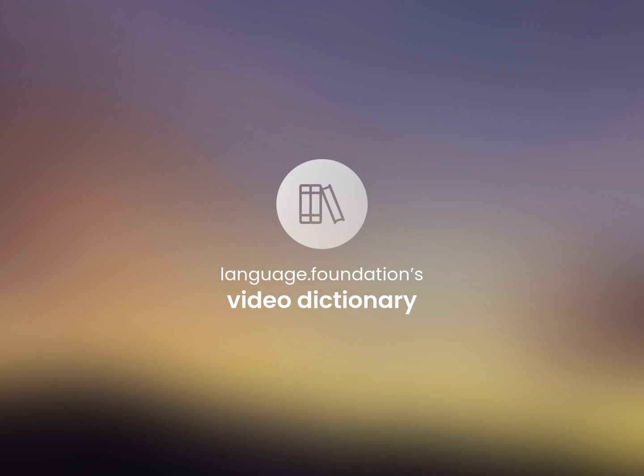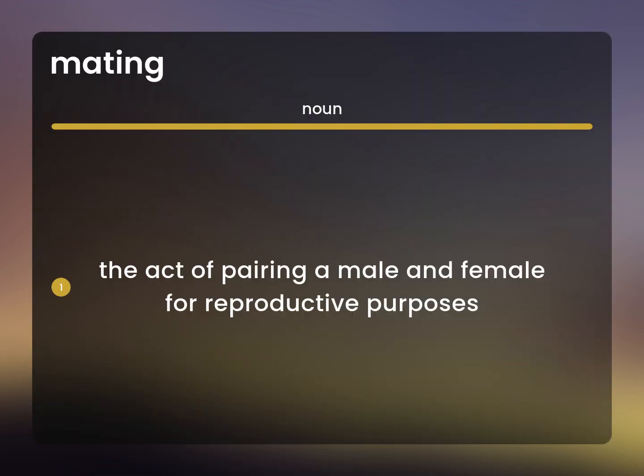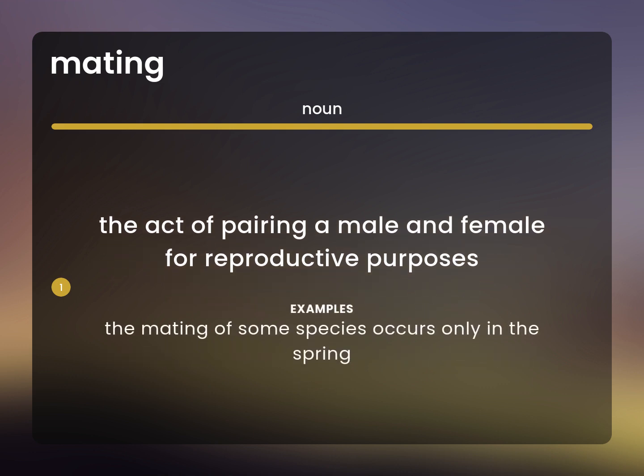Language.Foundation's Video Dictionary, helping you achieve understanding. The act of pairing a male and female for reproductive purposes. The mating of some species occurs only in the spring.